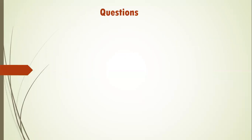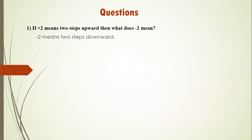Now let's answer some simple riddle questions using the number line. Question one: if plus two means two steps upward, what does minus two mean? The opposite of upward is downward, so minus two means two steps downward. Question two: if plus six means six kilometers towards east, what does minus six mean? The opposite of east is west, so minus six means six kilometers towards west.